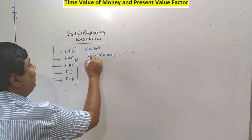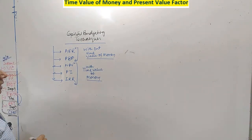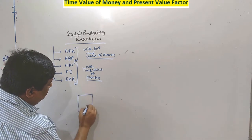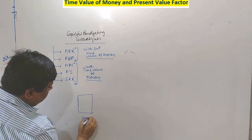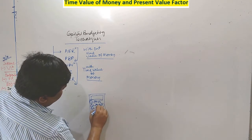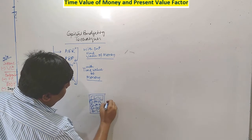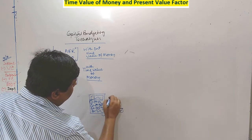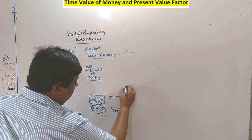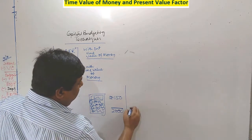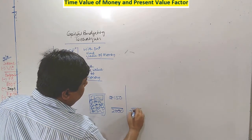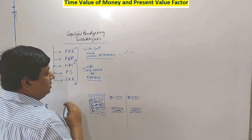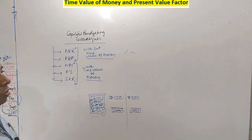What does it mean by time value of money? Suppose in the year 2000, I draw a picture of a calculator. The price of this calculator in the year 2000 is Rs 150. The same calculator during the year 2020, you find a price of Rs 300, or sometimes even more.